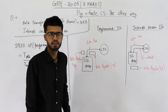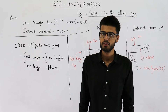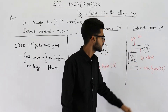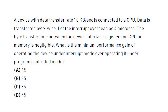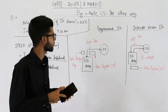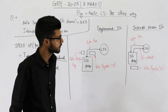This question is from the GATE 2005 exam, from the topic of I/O: programmed I/O versus interrupt-driven I/O. A device with data transfer rate 10 KB per second is connected to a CPU. Data is transferred byte-wise. Let the interrupt overhead be 4 microseconds. The byte transfer time between device interface register and CPU or memory is negligible. What is the minimum performance gain of operating the device under interrupt mode over operating it under program-controlled mode?